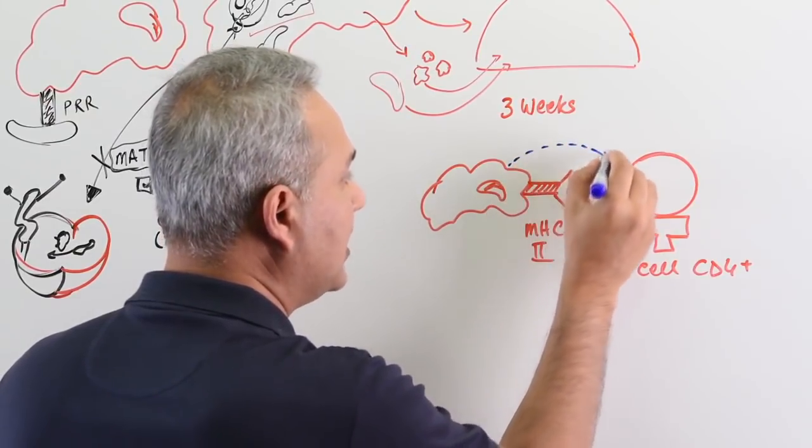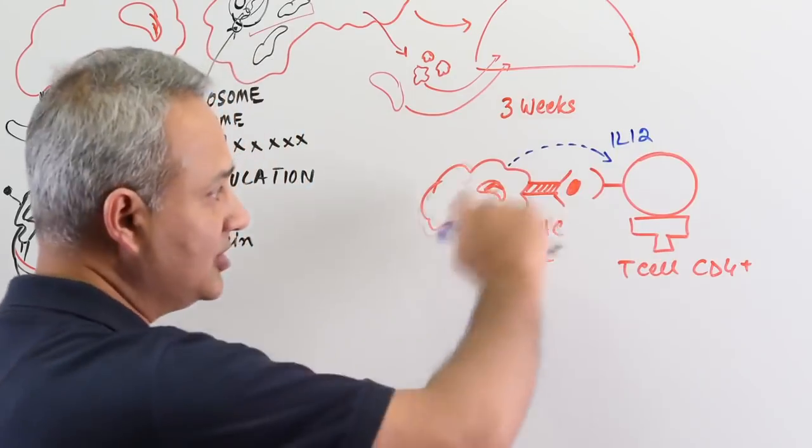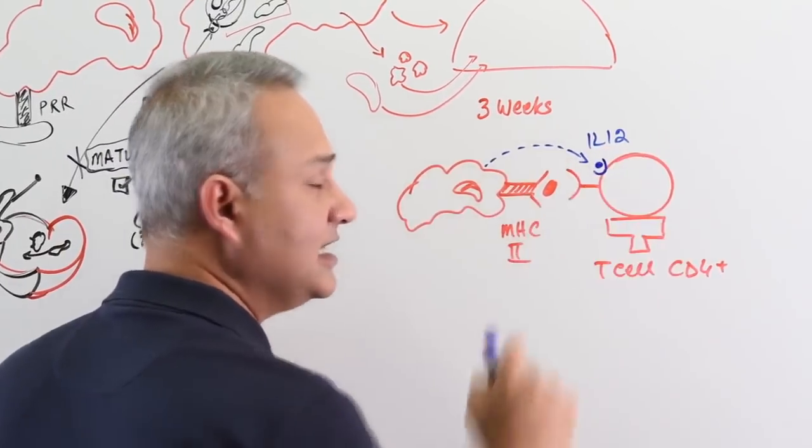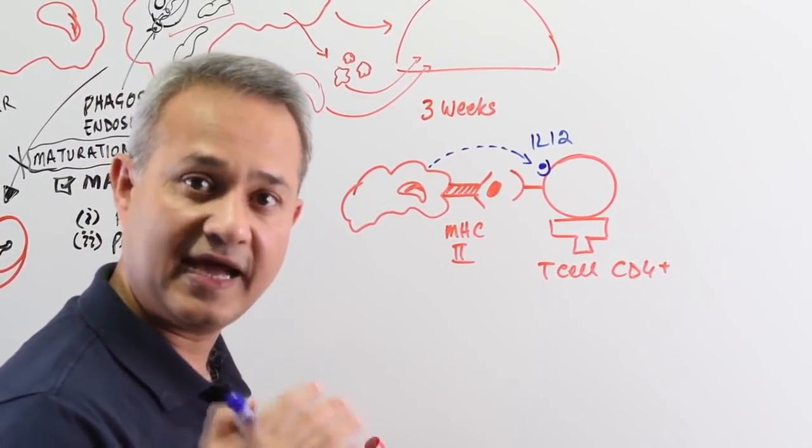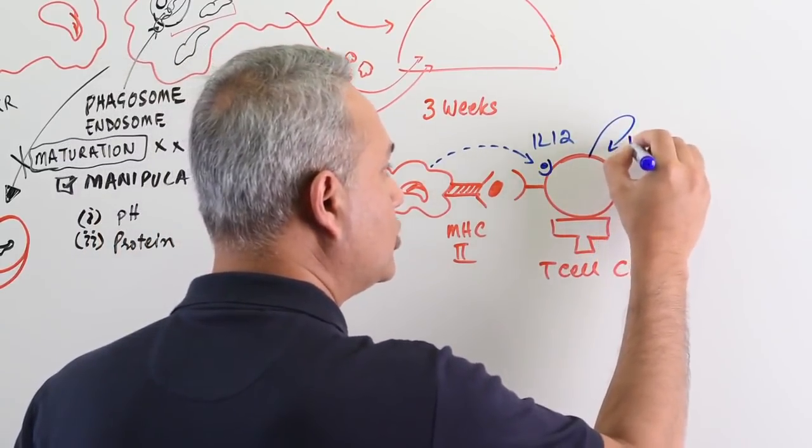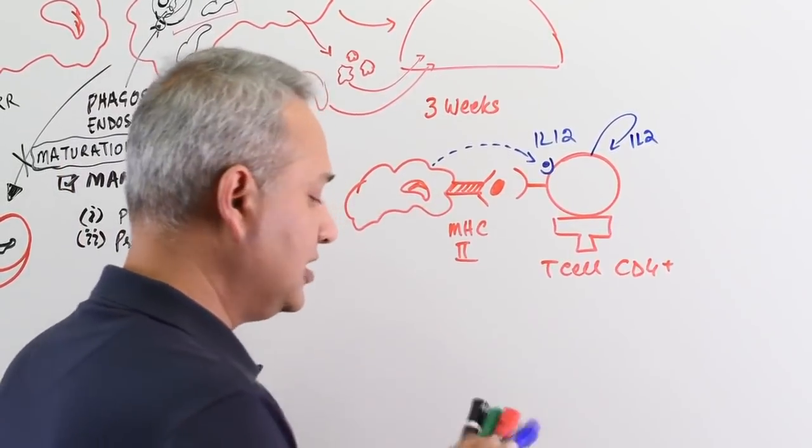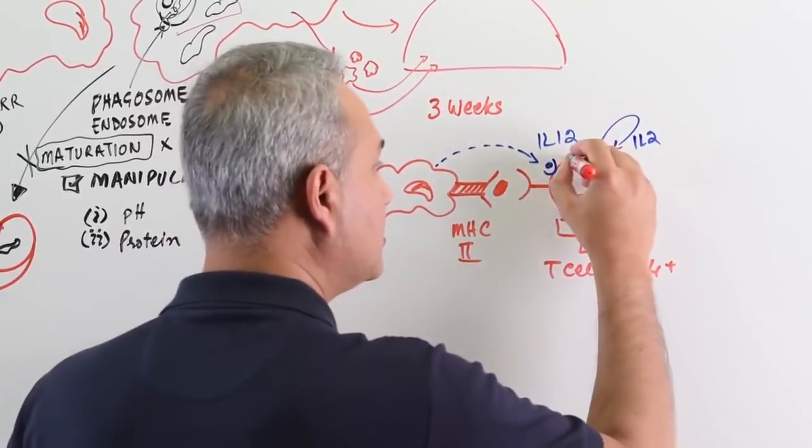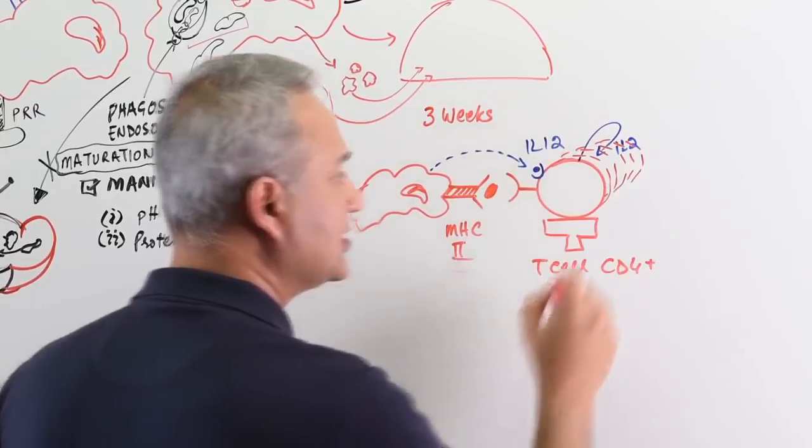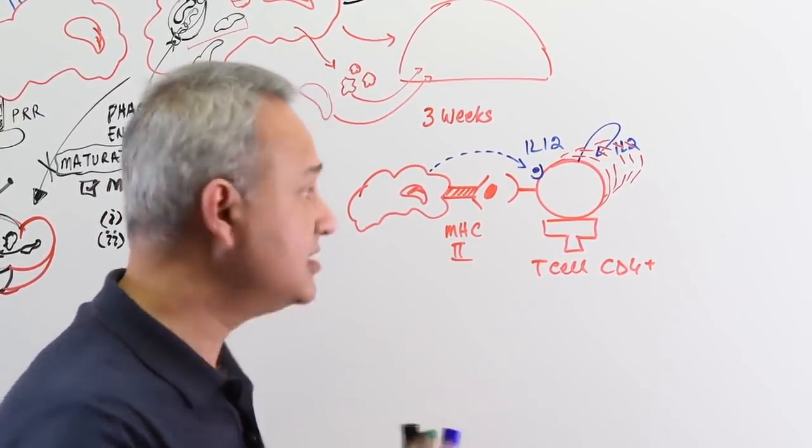With that, macrophage is going to release IL-12. Remember, IL-12 interferon gamma axis. This is the co-stimulation. When IL-12 will come in here, CD4 cells will become activated. When they become activated, what will they do? These will release IL-2 in addition to many other cytokines. IL-2 will cause proliferation of the CD4 cells. Now the CD4 cells are going to start multiplying. The lymph node is going to start becoming swollen with the CD4 cells.